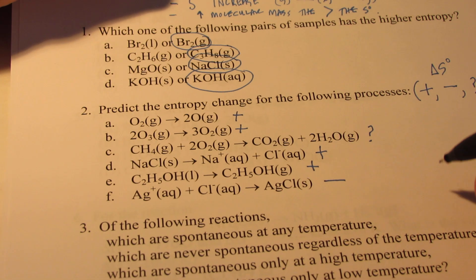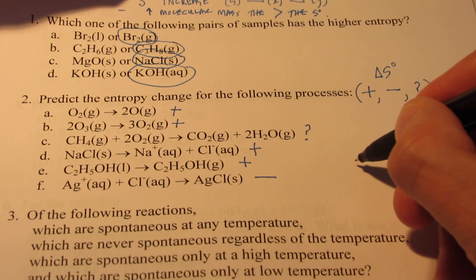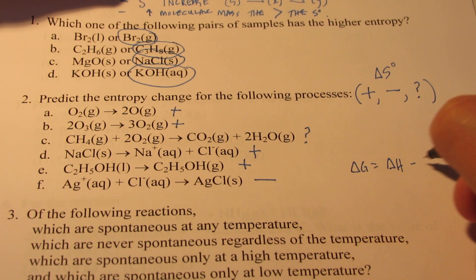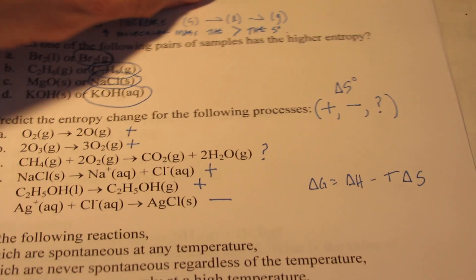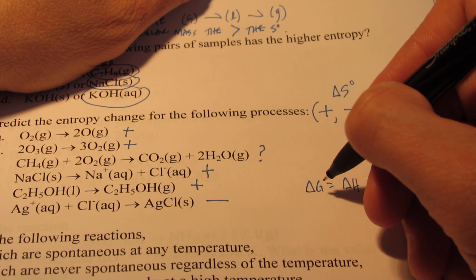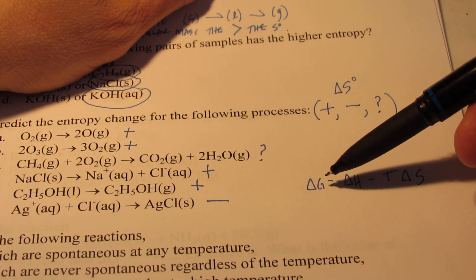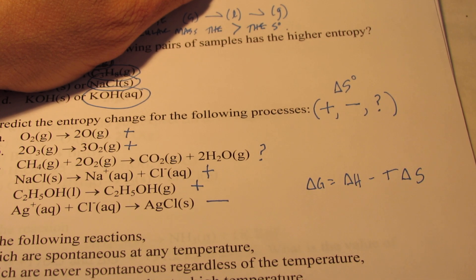Now we're going to talk a little bit about the Gibbs-Helmholtz equation. Let's see if I can fit it in up here. Delta G equals delta H minus T delta S. Remember that equation? Remember, if delta G is negative, it means the reaction is spontaneous. If delta G turns out to be positive, it means the reaction is not spontaneous.